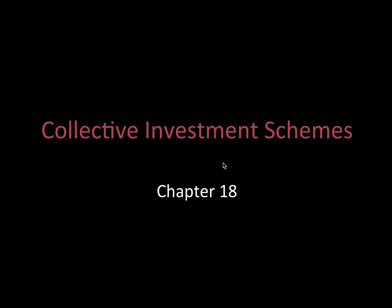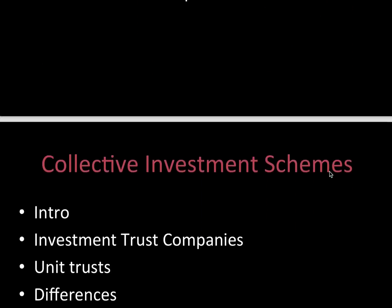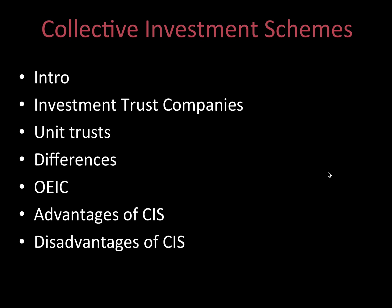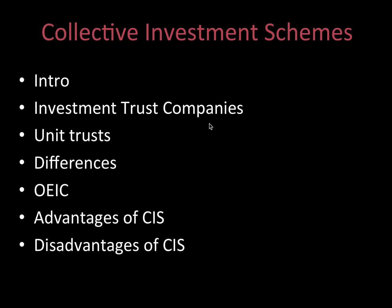Hey guys, it's MJ, the Student Actuary, and we're talking CA1 Chapter 18, which is Collective Investment Schemes. What are we going to get through in this chapter? We're going to look at an introduction, what is an investment trust company, unit trusts and their differences, an open-ended investment company, and the advantages and disadvantages of Collective Investment Schemes.